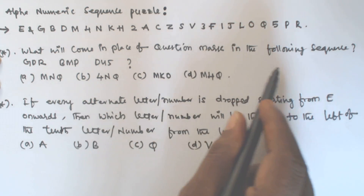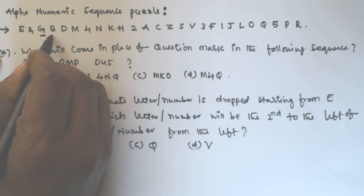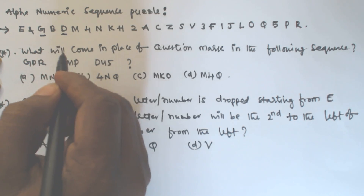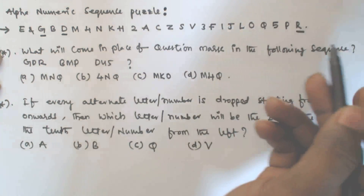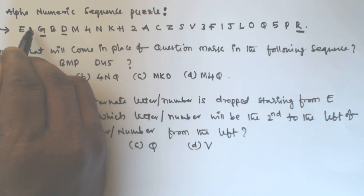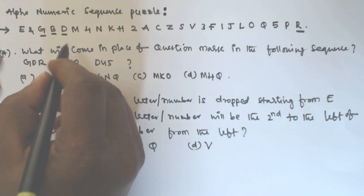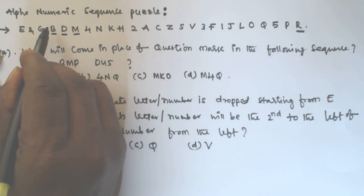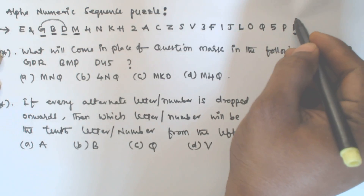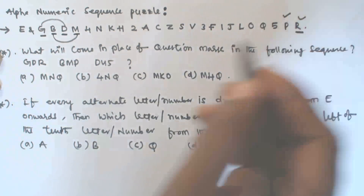For the first question, look at G D R: G is here, then skipping one character takes D, and then R. So the pattern is: take a character, skip one, take the next. Similarly, B M P follows the same pattern — starting with B, skipping one, then M, skipping one, then P.